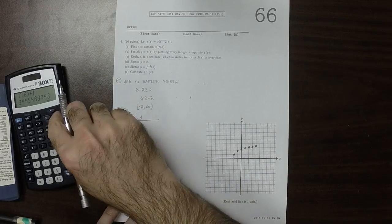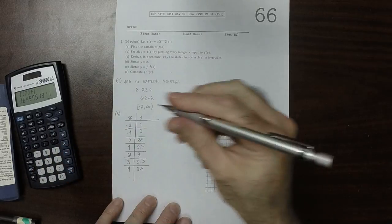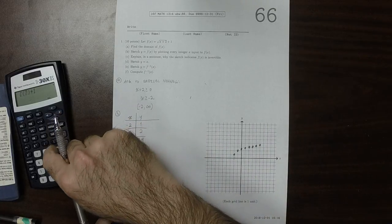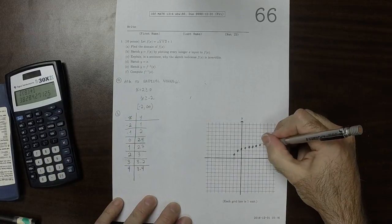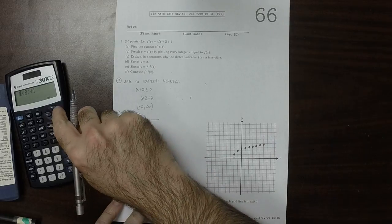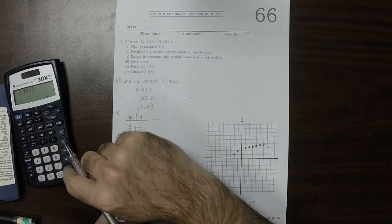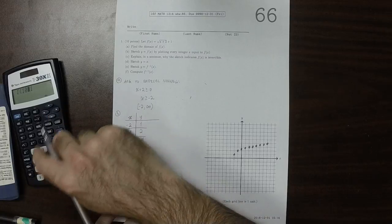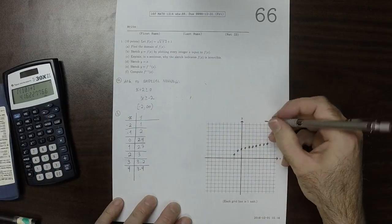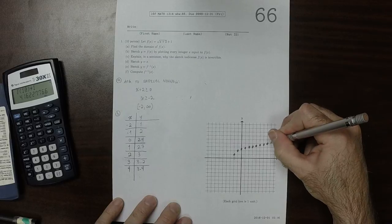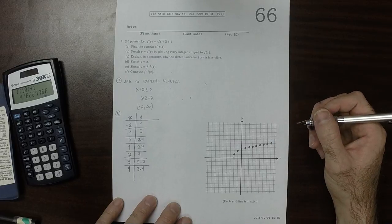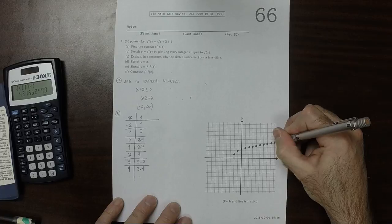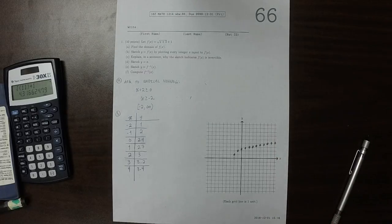So I'll do the rest with the calculator now. 3.6, 2.8, 4, 4.2-ish, and 4.3-ish. Okay, so that's every integer point.